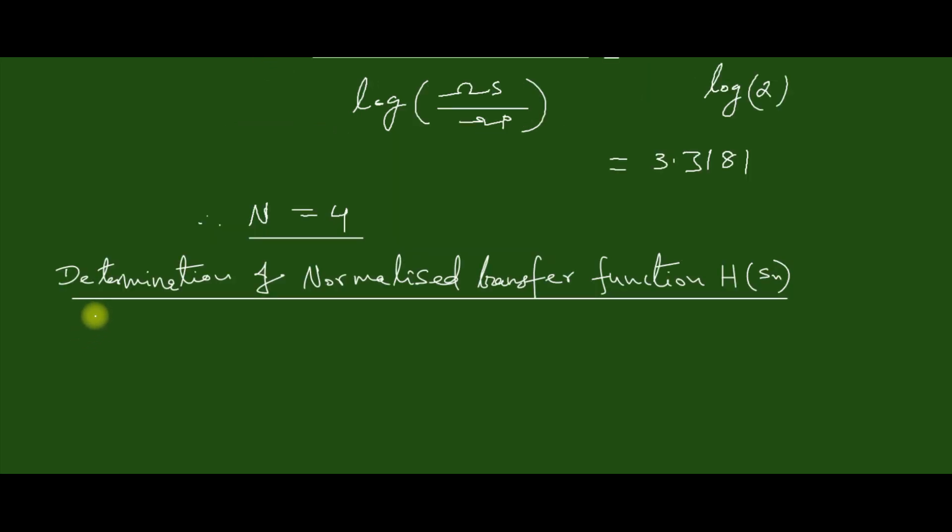Next step is the determination of the normalized transfer function H(s_N). So this H(s_N) you can directly obtain from the lookup table as H(s_N) equal to (s_N² + 0.765·s_N + 1) etc. So corresponding to N equal to 4, we can directly take the H(s_N).